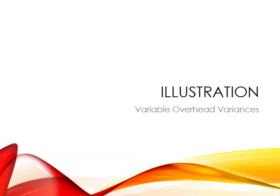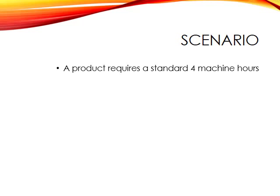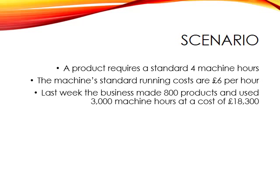Let's look at an illustration. A product requires a standard four machine hours, and each machine hour has a standard running cost of £6 per hour, so each unit should cost four hours multiplied by £6, which is £24. Last week, the business made 800 products, used 3,000 machine hours, and incurred a total variable overhead cost of £18,300.